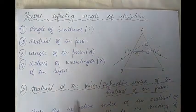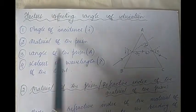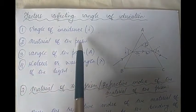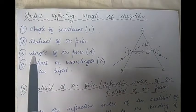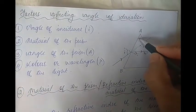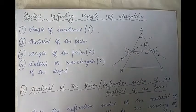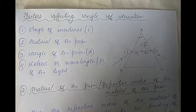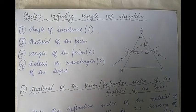The first factor is the angle of incidence. The second is the material of the prism — meaning the refractive index of the material of the prism. The third factor is the angle of the prism, on which the angle of deviation also depends. And the fourth factor is the color or wavelength of light.